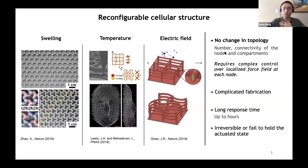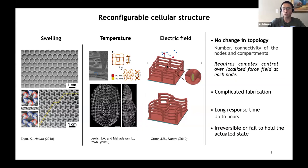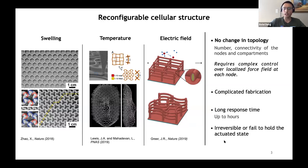By fundamental property, I mean the number or connectivity of nodes and compartments. For example, these methods can probably change from a square lattice to a deformed square lattice, but it is very difficult to change from a triangular lattice to a hexagonal lattice, because they are of completely different topology. Those changes require carefully working around the node to fold, stretch, and act on the nodes — requiring complex control of localized fields individually at each node. Besides, most of these methods also suffer from complicated fabrication, long response time, and irreversibility or failure to hold the actuated state after the stimuli is off.